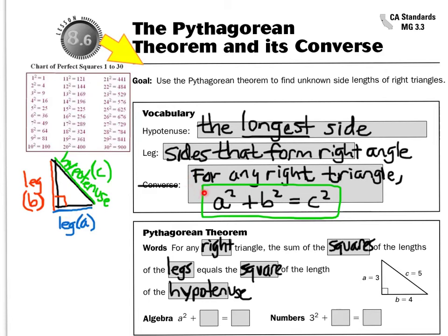And for any right triangle, A squared plus B squared equals C squared. So the Pythagorean Theorem says for any right triangle, the sum of the squares of the lengths of the legs, so A squared and B squared, has to equal the length of the hypotenuse.